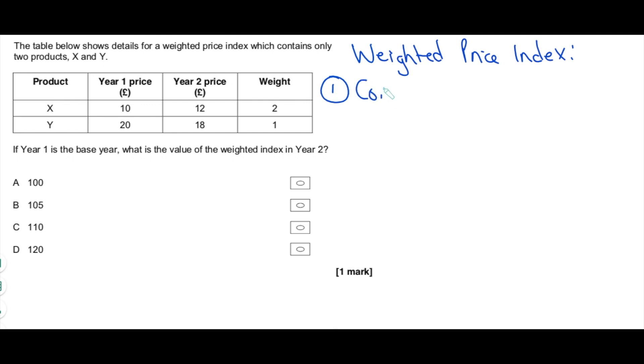First thing, you have to convert prices in that year where they ask you to work out the weighted index. So convert the prices into index numbers, into index form. We have to work out the year two weighted index, and therefore we have to convert 12 and 18 into index form. We can use the equation we've just covered to make sure that's very simple. Once we've done that, we need to multiply the index numbers we've just calculated by their weight.